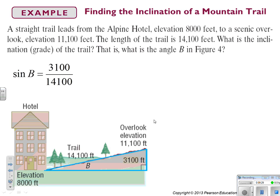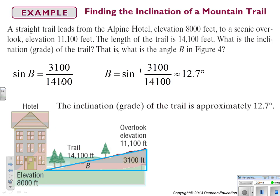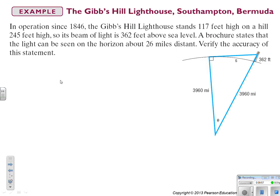So if you look at the information you have, I have opposite and hypotenuse. So the opposite side is 3,100 and the hypotenuse is 14,100. I inverse sine of that and I get 12.7 degrees. So the inclination of the trail is approximately 12.7. Draw the picture. I promise. It sorts your brain, gets things set right.